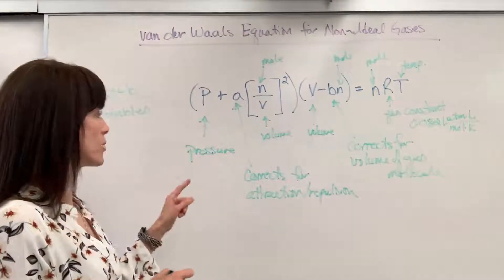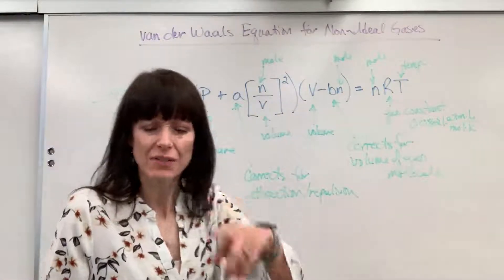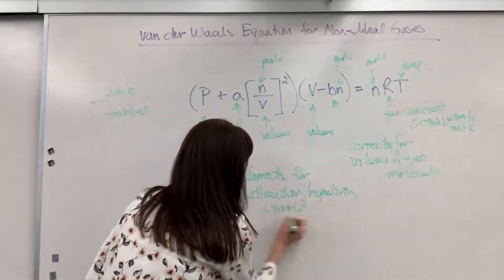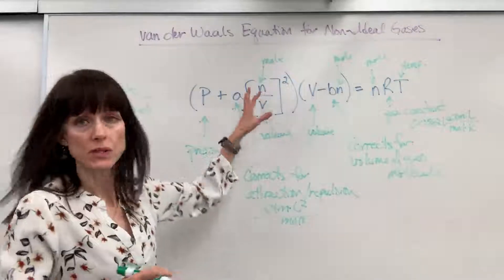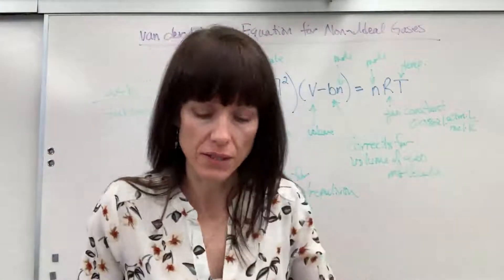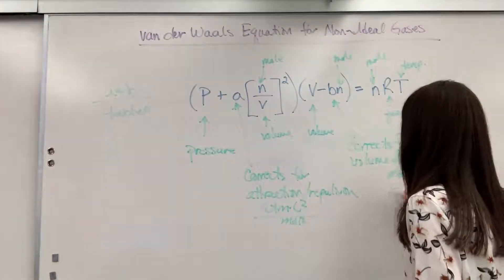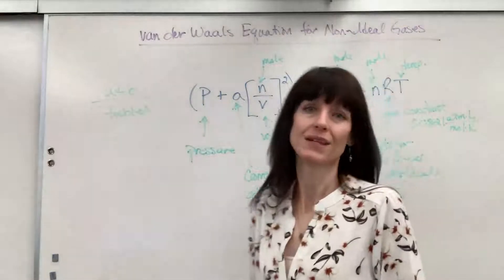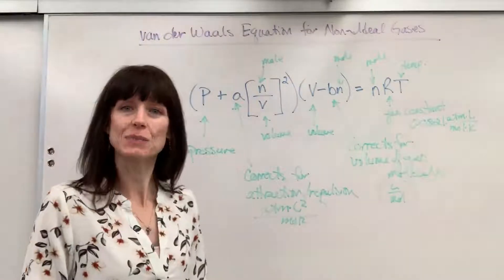The important points to know, again, A corrects for attraction and repulsion. In fact, let me give you the unit on A. It is ATM times liter squared divided by mole squared. And if you plug in the units, you'd be able to see how all that cancels out. And then B is just liters per mole. So there are your units. And so even by looking at the units, you'll be able to tell what's A and what's B.